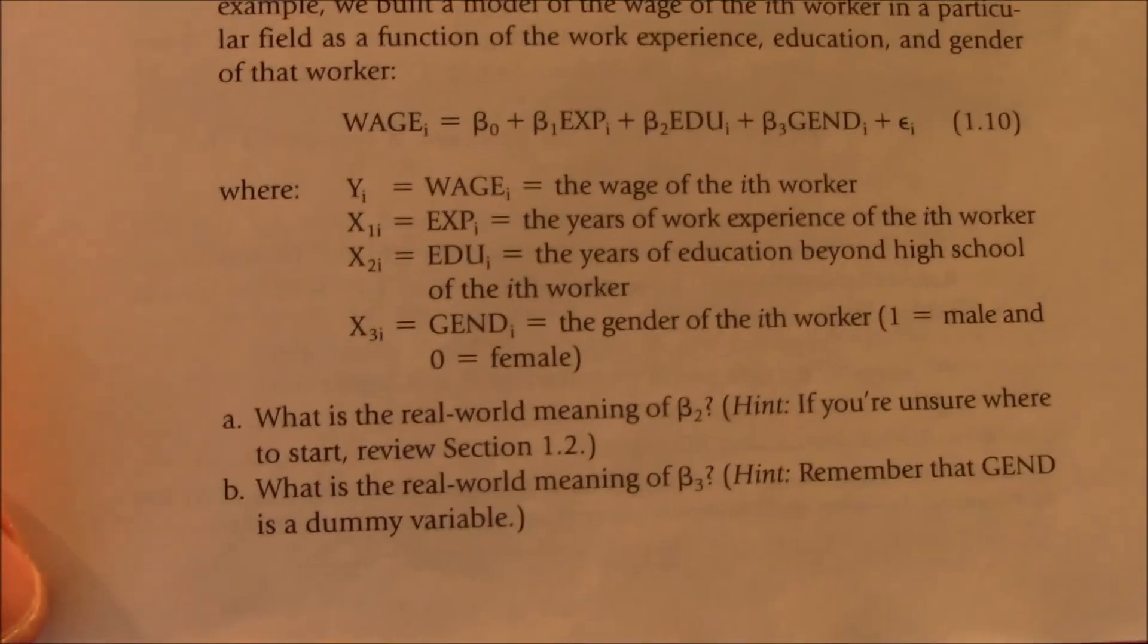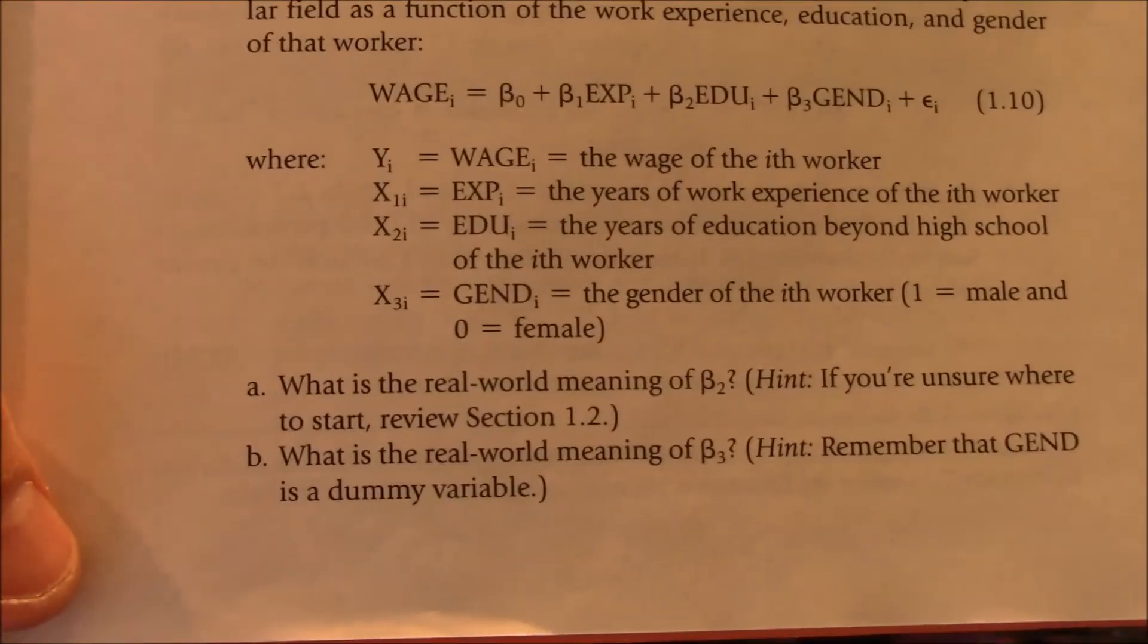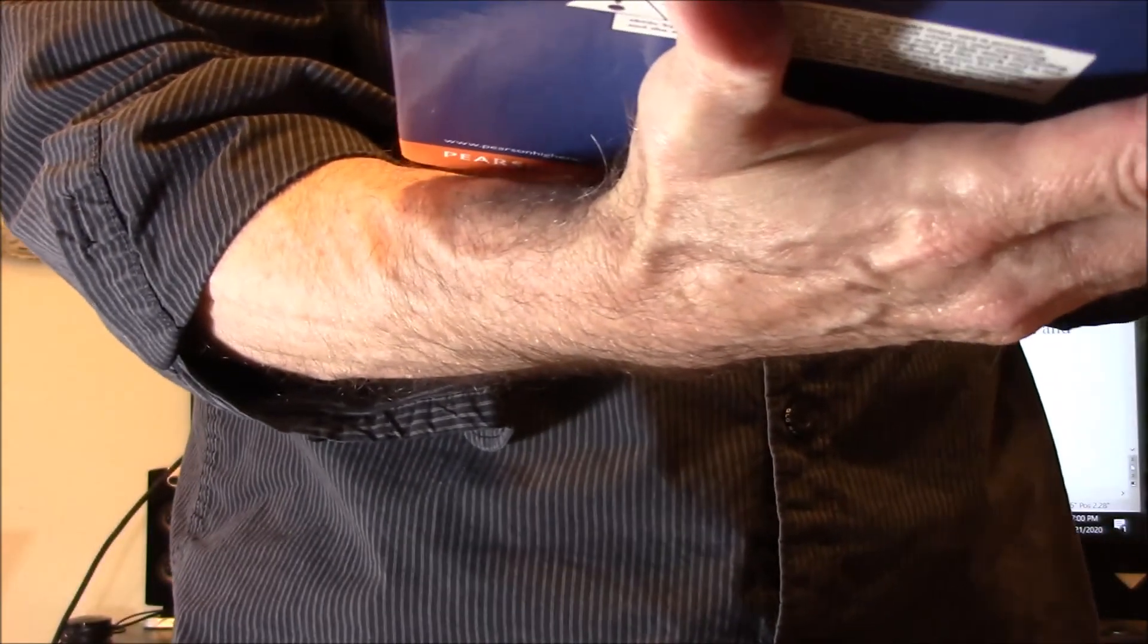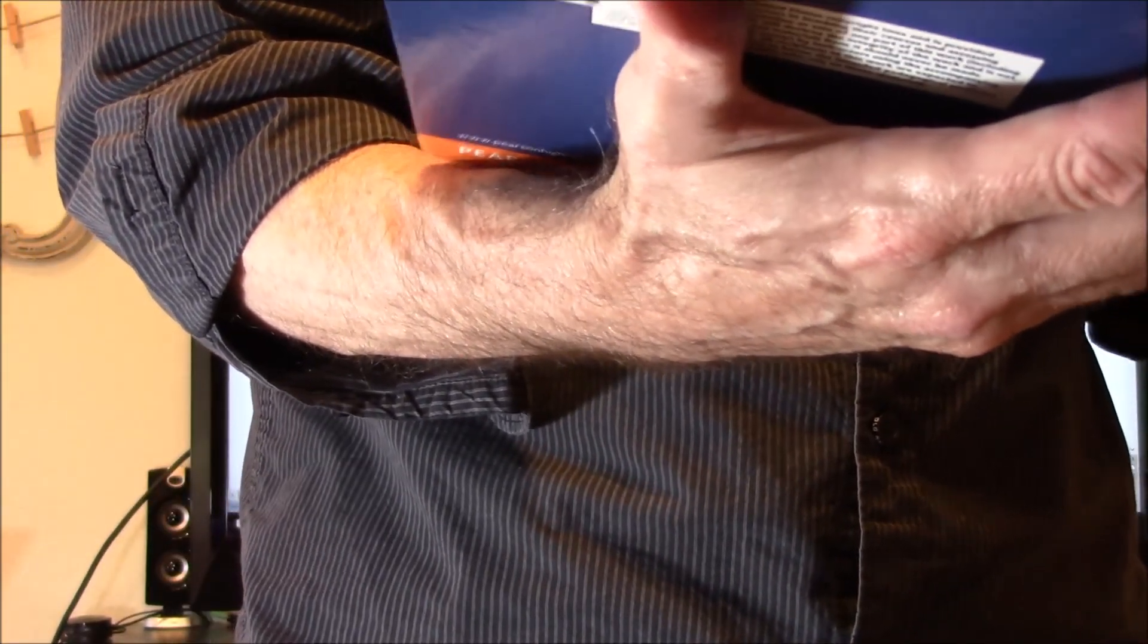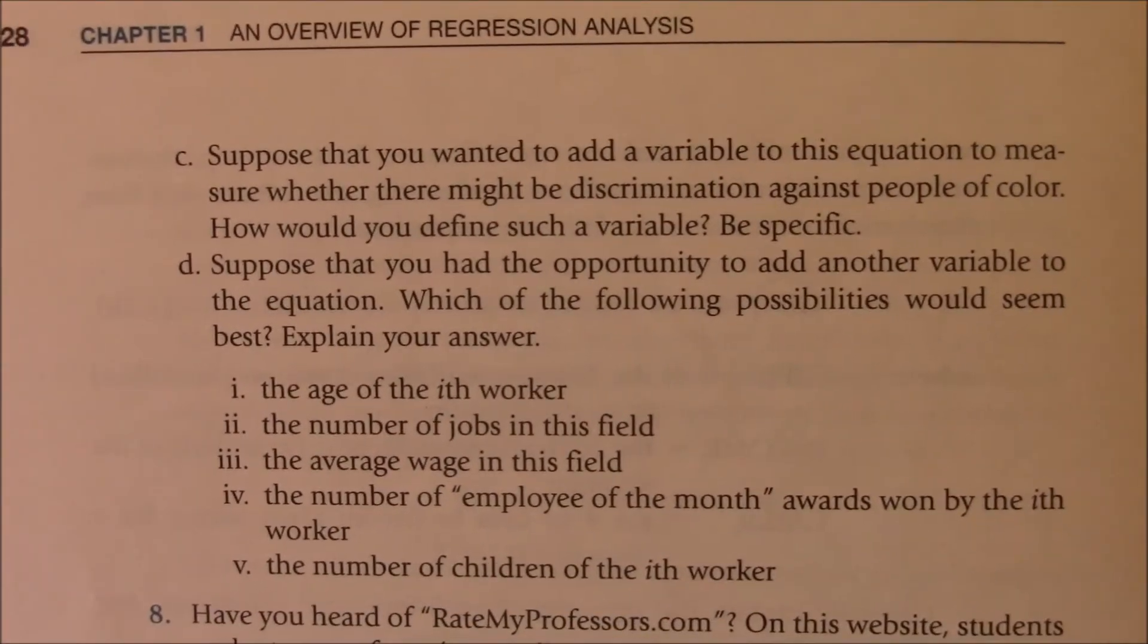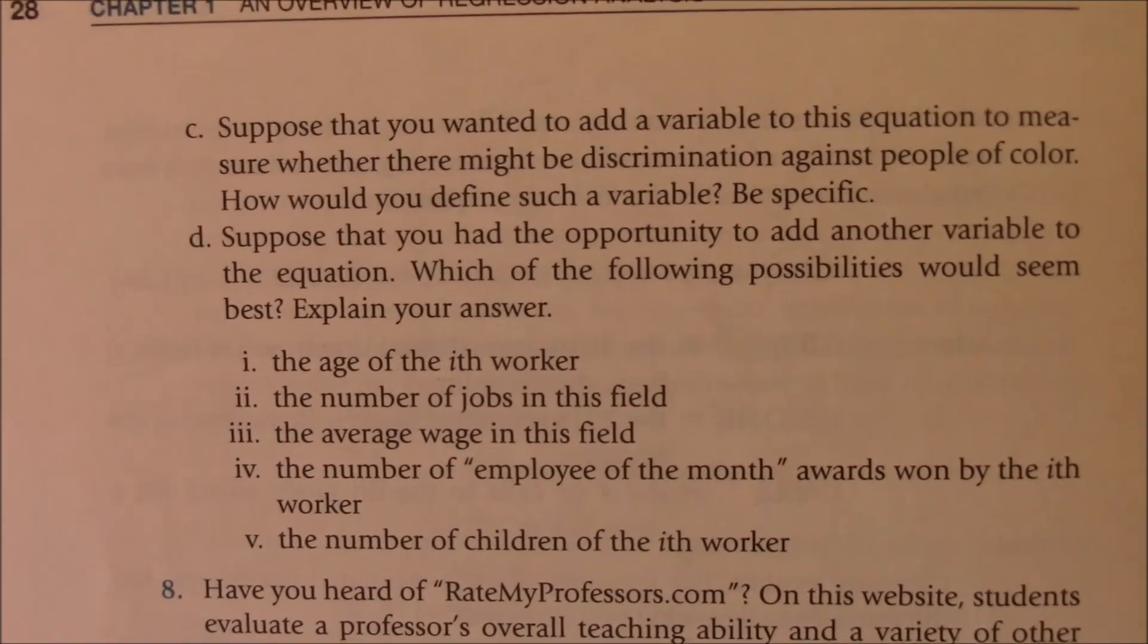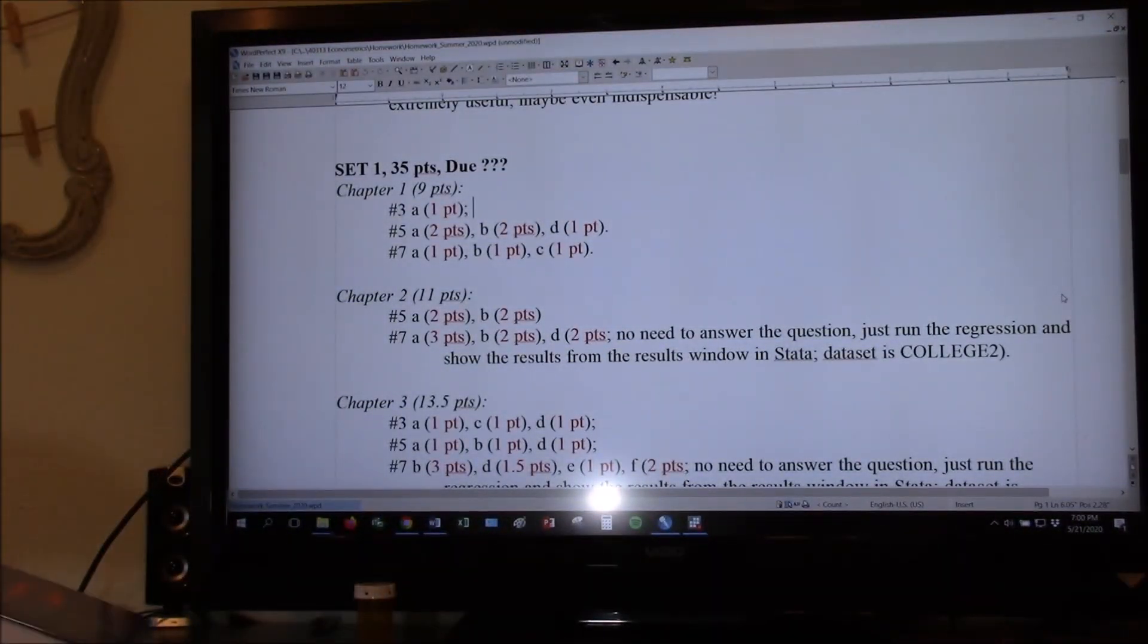Now don't forget to say holding the impact of all the other variables constant there. I've given away some free points. And then last it has an interesting question I thought, that's why I assigned it. What if you were going to add a dummy variable to represent the potential for discrimination against people of color? How would you define such a variable? Be specific. So you just look back at the one for gender and look at that and then figure out analogously how you would do that for people of color. Okay, and that's all of chapter one.